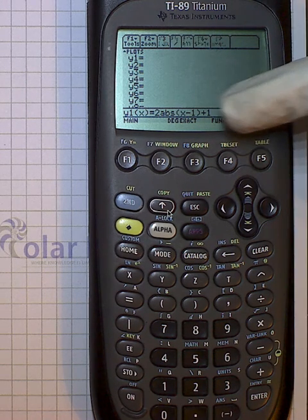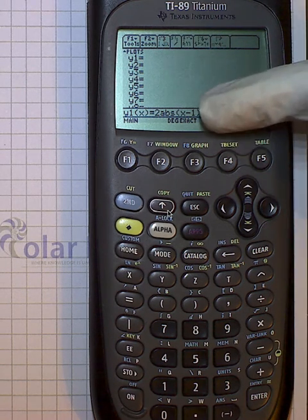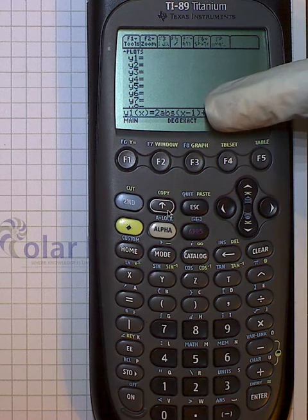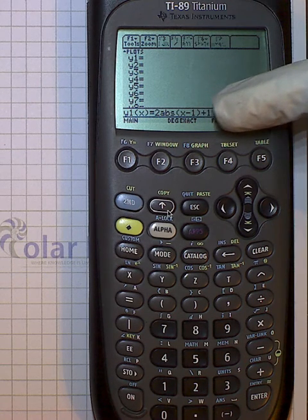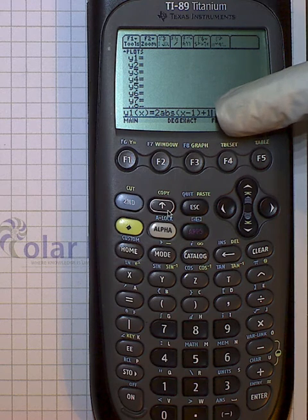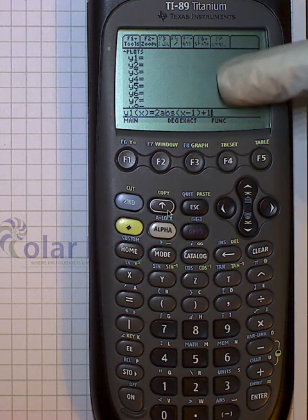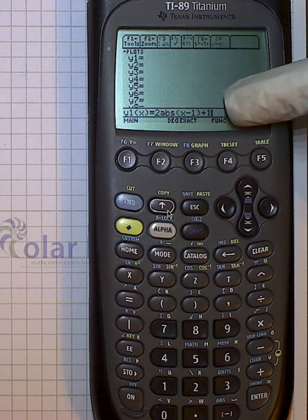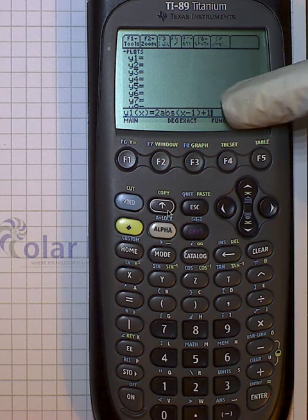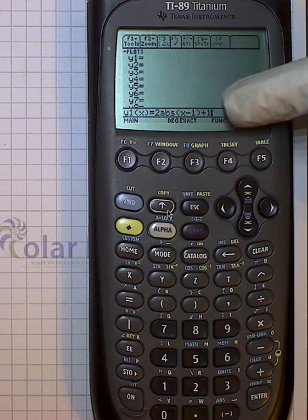So this will mean that we have, like, an absolute value graph that's not quite the V of just absolute value of X, but a narrower V, and then it's shifted to the right one, and then up one, so the vertex is going to be at positive one comma positive one. So it's going to be at one one, the vertex, yeah?